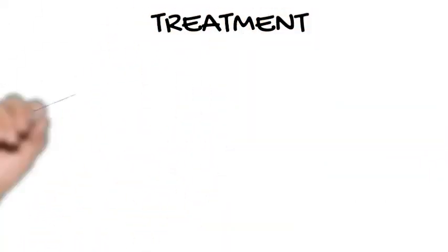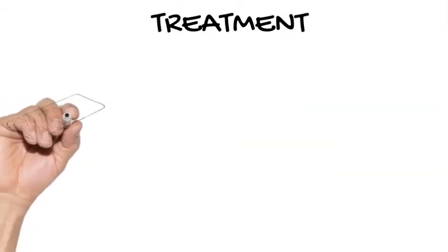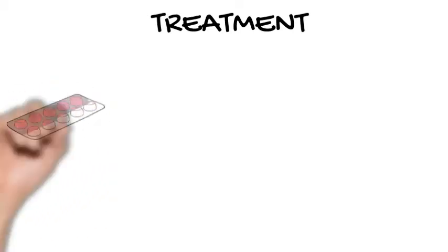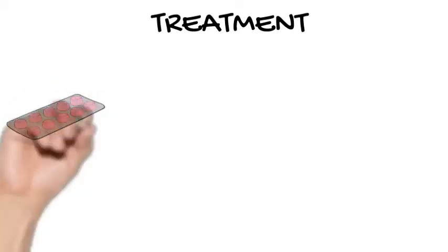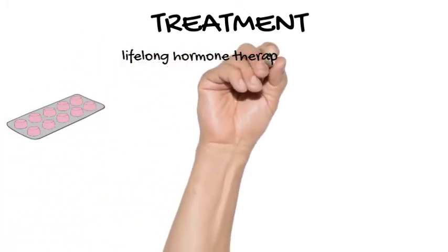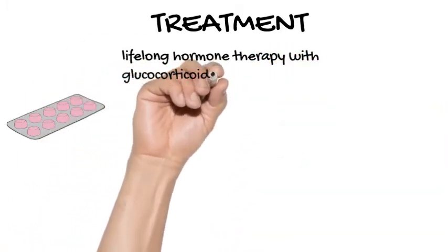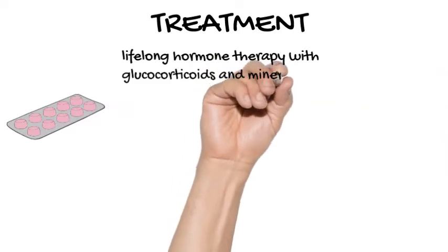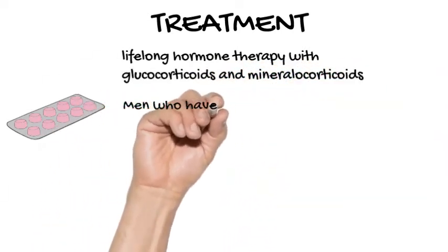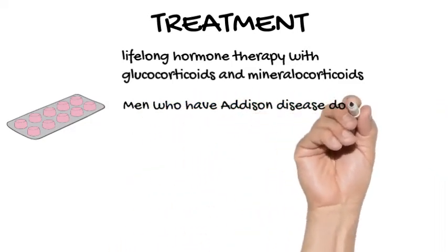Treatment - Hormone Therapy: Treatment for Addison disease consists of lifelong hormone therapy with glucocorticoids and mineralocorticoids. To date, there is no therapy available to stop the underlying immune destruction of the adrenal cortex. Generally, glucocorticoid replacement includes oral prednisone or hydrocortisone. Men who have Addison disease do not need replacement with androgens because their testes are able to produce adequate testosterone levels.